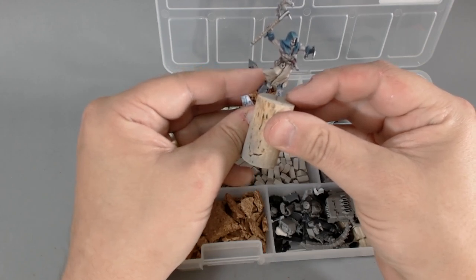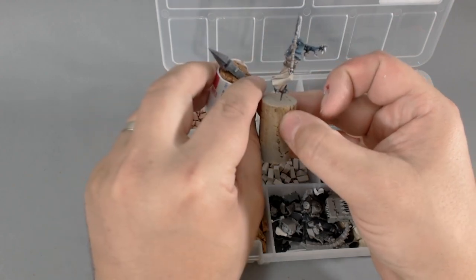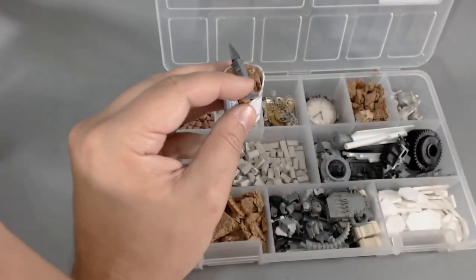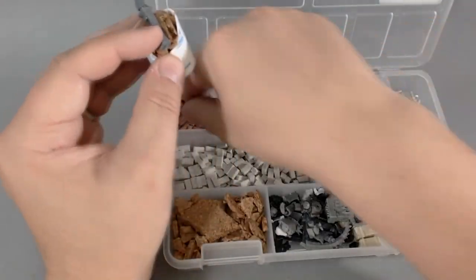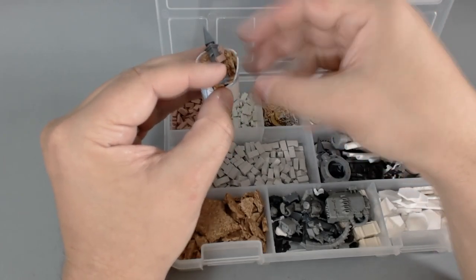So we'll put some little bricks and other bits and pieces on there, and I think that'll work. The first thing we're going to do to this little pillar is to glue some cork to the bottom of it.